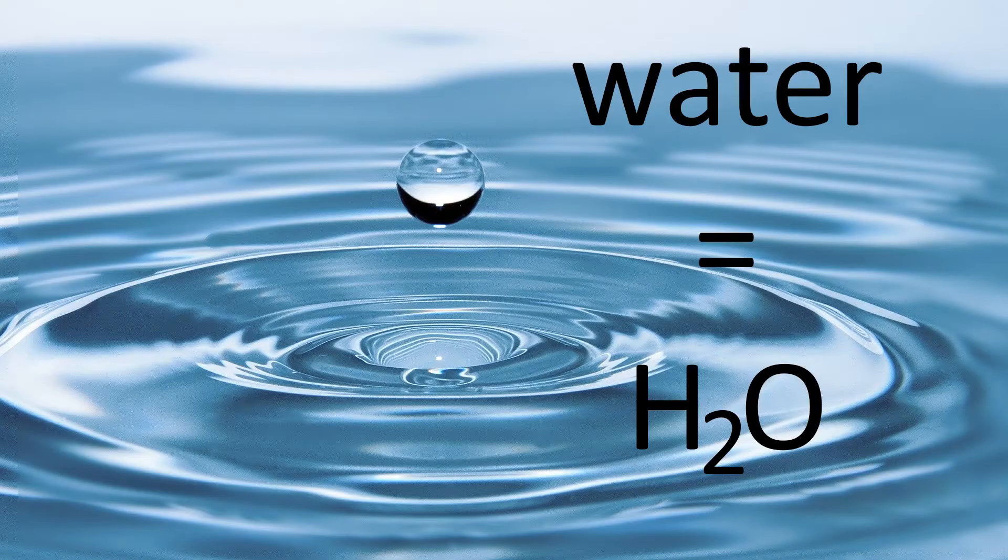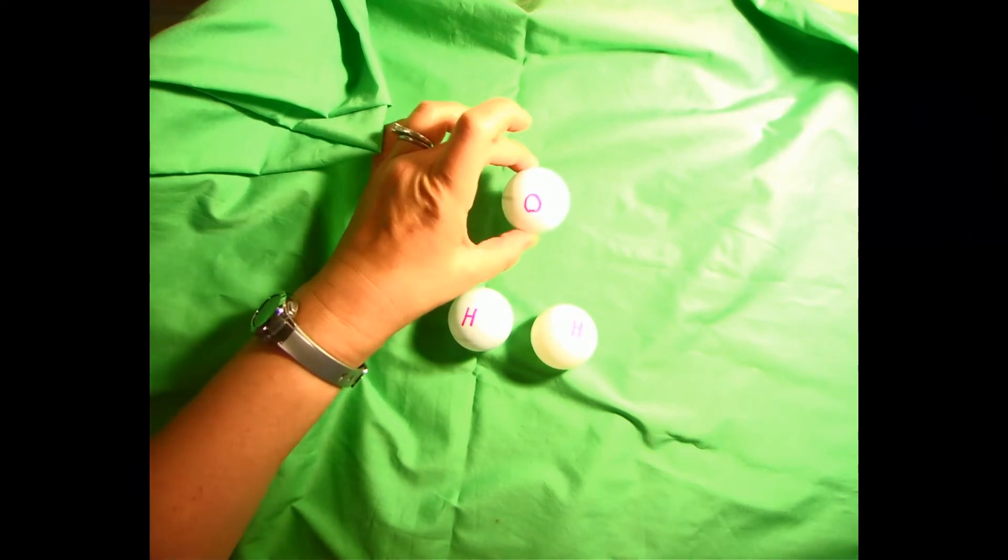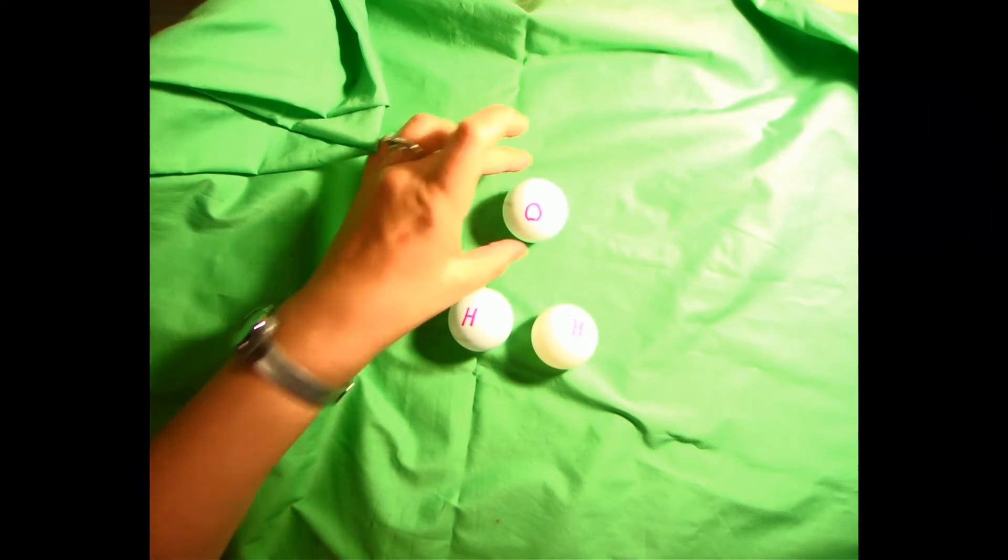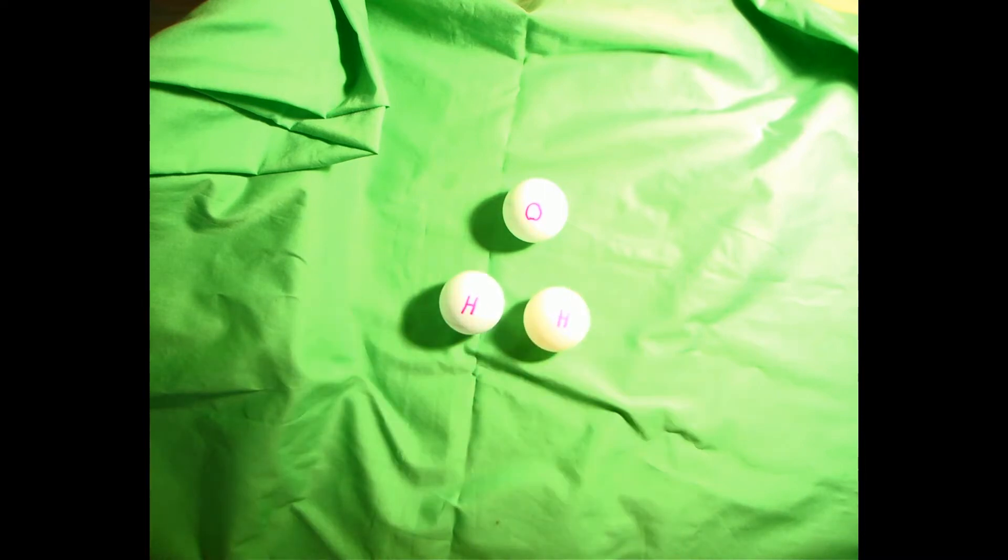You've probably heard water called H2O. That's a name that describes the atoms that make up one little bit of water. Water is made up of three atoms. One of those atoms is an oxygen atom, thus the O. Two of those atoms are hydrogen atoms, thus the H2.